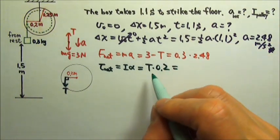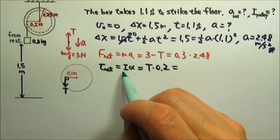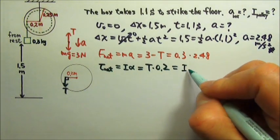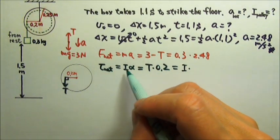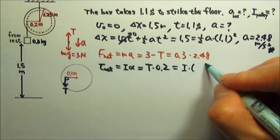And this force times the lever arm is the torque, which equals Iα. We are looking for I. What is α?